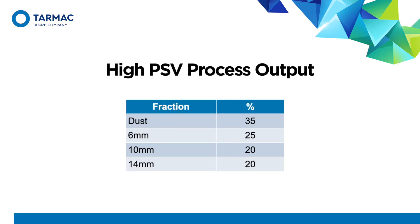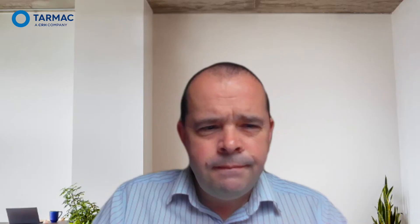So at a gritstone quarry we end up with something like the following split in sizes when we crush everything down to 14mm stone or smaller. Because high PSV 20mm is only really needed for pre-coated chippings, this size is often passed back through the crushing process, but this generates dust. So the message from this section is about working between specifiers and asphalt producers to spread the load on single sizes to match an efficient crushing process.